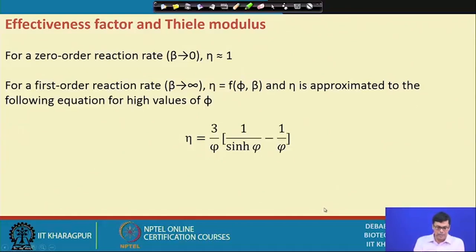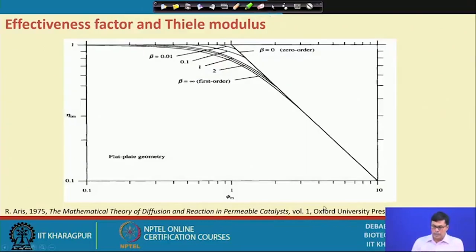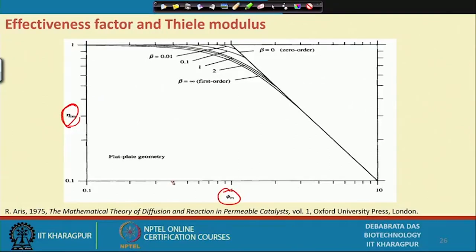For a zero-order reaction (β tends to 0), eta equals 1. Eta can be correlated with the Thiele modulus phi through a specific equation and graph. The graph shows the correlation between eta and phi: if phi is less than 0.3, eta is close to 1. If phi is greater than 0.3, eta is less than 1 and mass transfer problems increase. When β equals 0 it is zero-order; when β tends to infinity it is first-order.